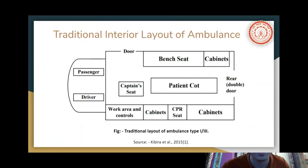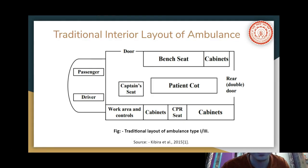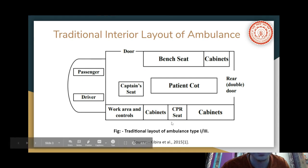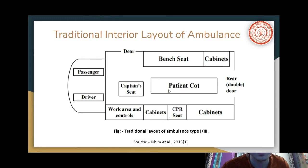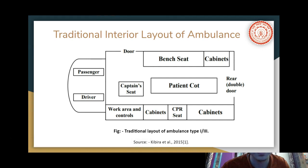First, we start off with the traditional interior layout of an ambulance. We see three seating arrangements: the bench seat, the captain seat, and the CPR seat. The patient cot area is where the patient would be loaded. The captain seat and CPR seat are single seats, while the bench seat can hold multiple people. The CPR seat is placed closer to the patient's chest so that the person sitting there can perform CPR.